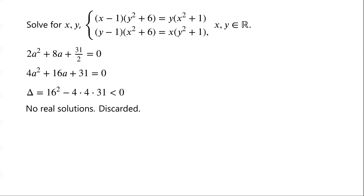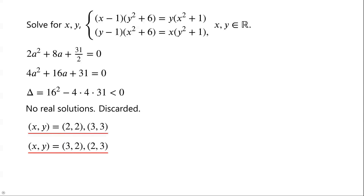In summary, there are 4 sets of solutions: (X, Y) = (2, 2), (3, 3), (3, 2), (2, 3).